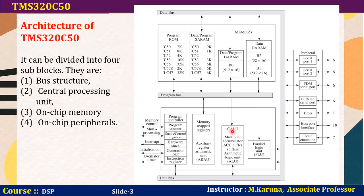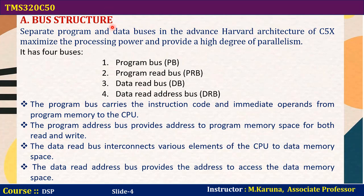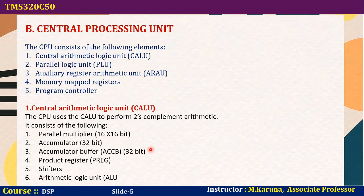The bus structure consists of program bus and data bus, which maximize processing power and provide a high degree of parallelism. This structure consists of four buses: program bus, program read bus, data read bus, and data read address bus. The program bus carries the instruction code and immediate operands from program memory to the CPU. The program address bus provides address to program memory space for both read and write operations. The data read bus interconnects various elements of the CPU to data memory space. The data read address bus provides the address to access the data memory space.